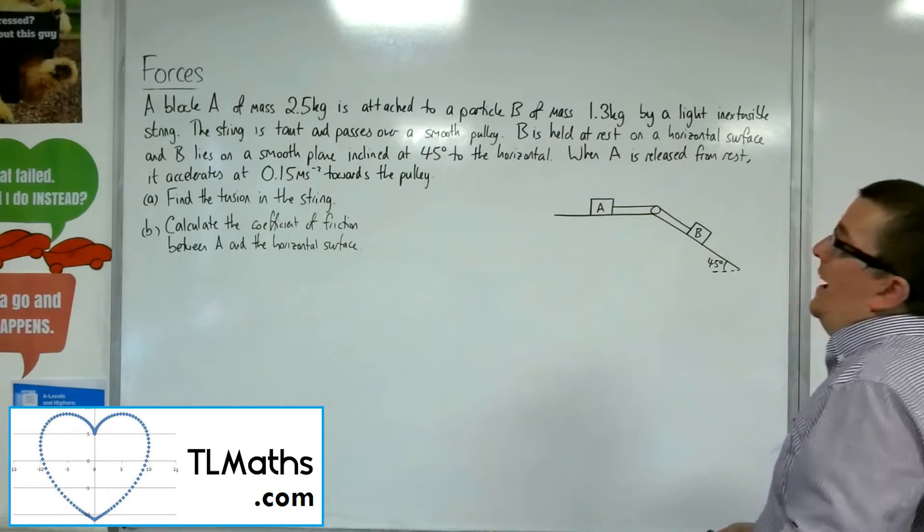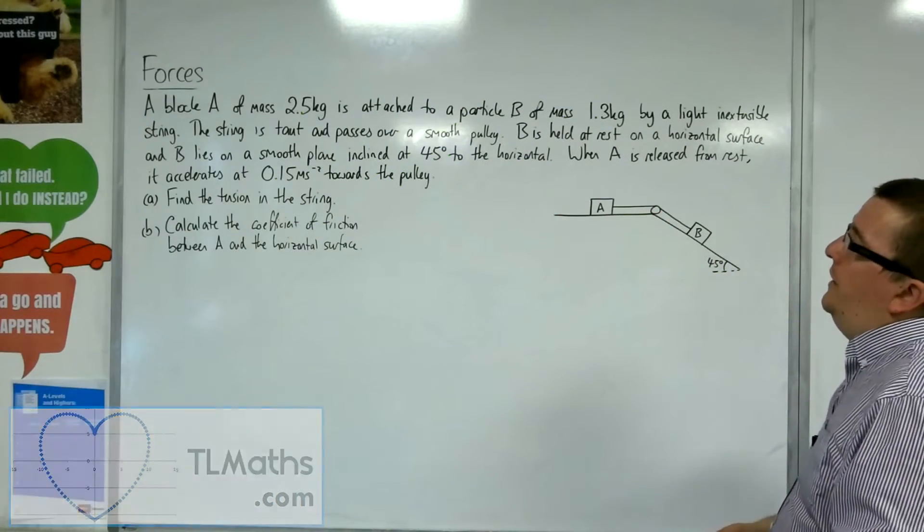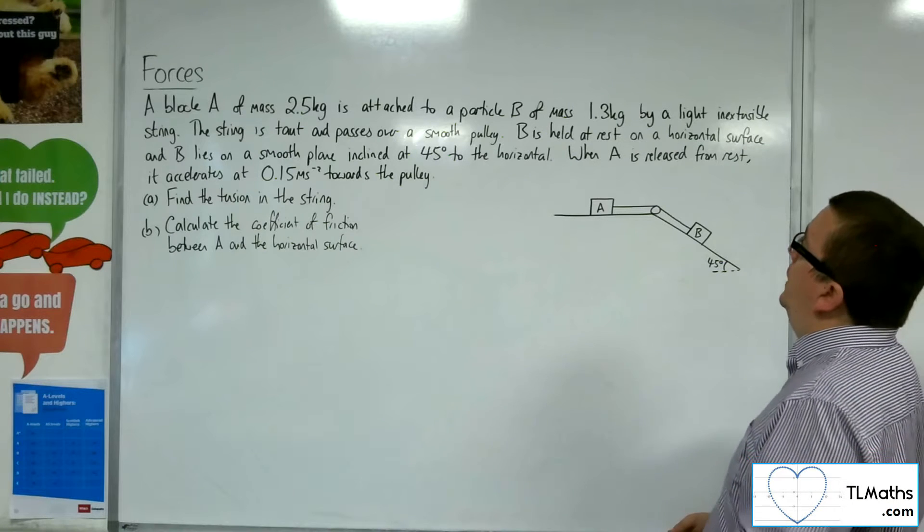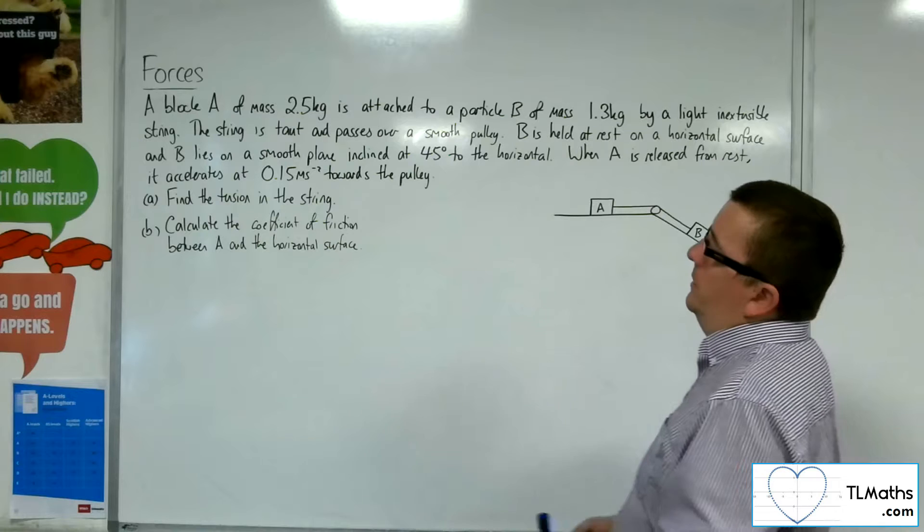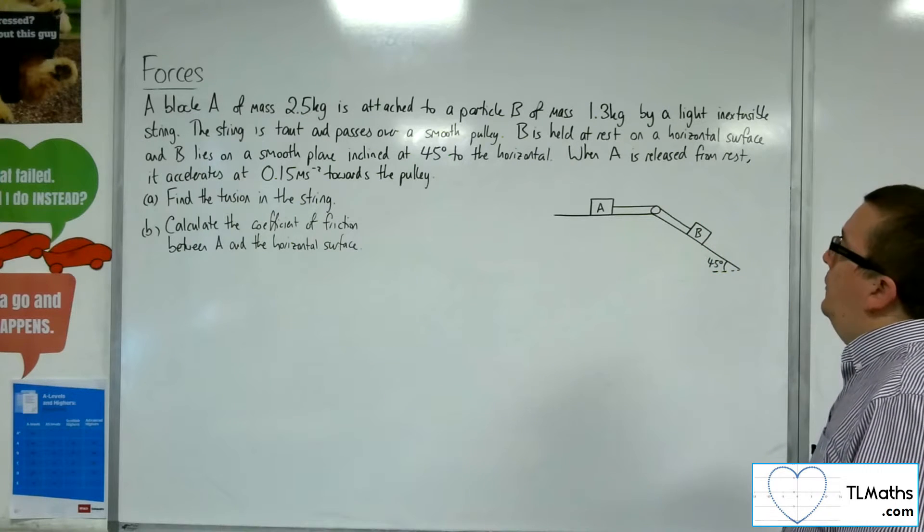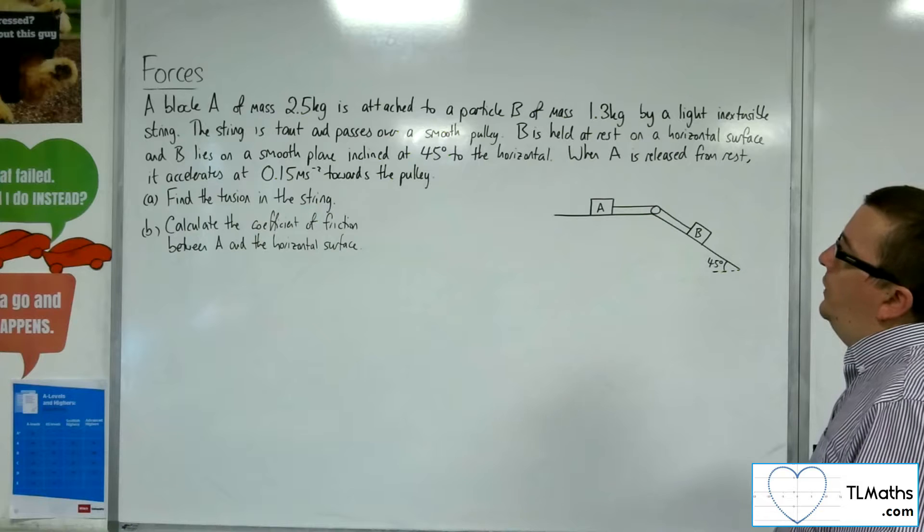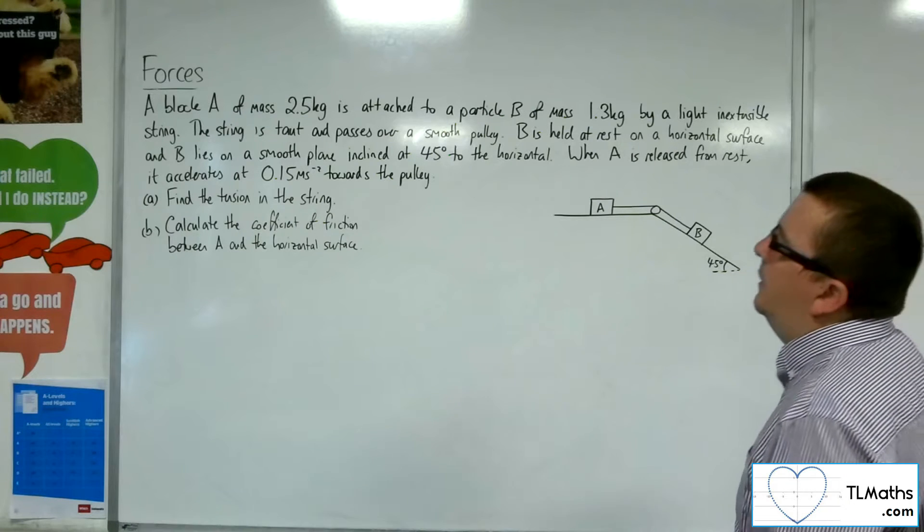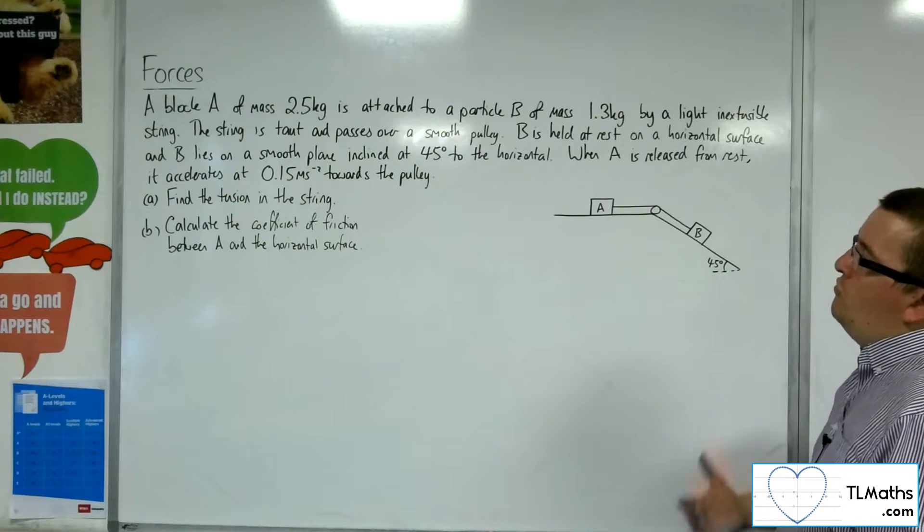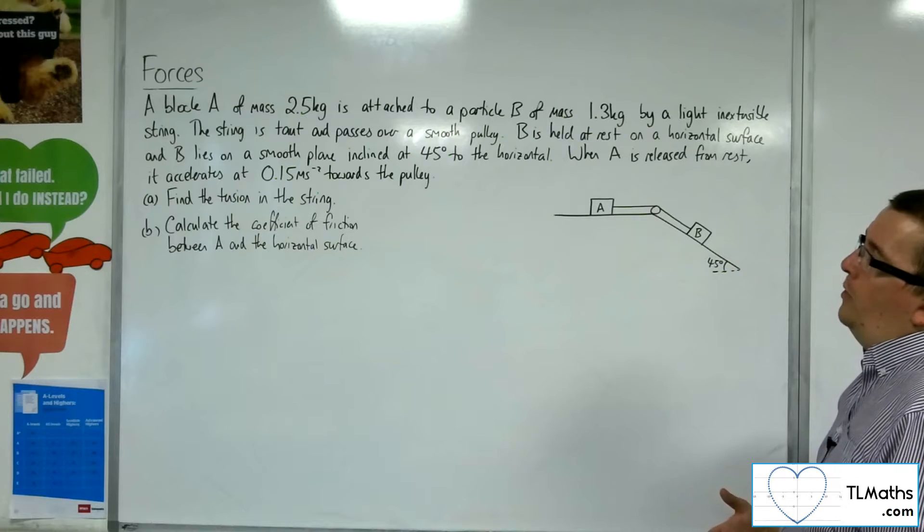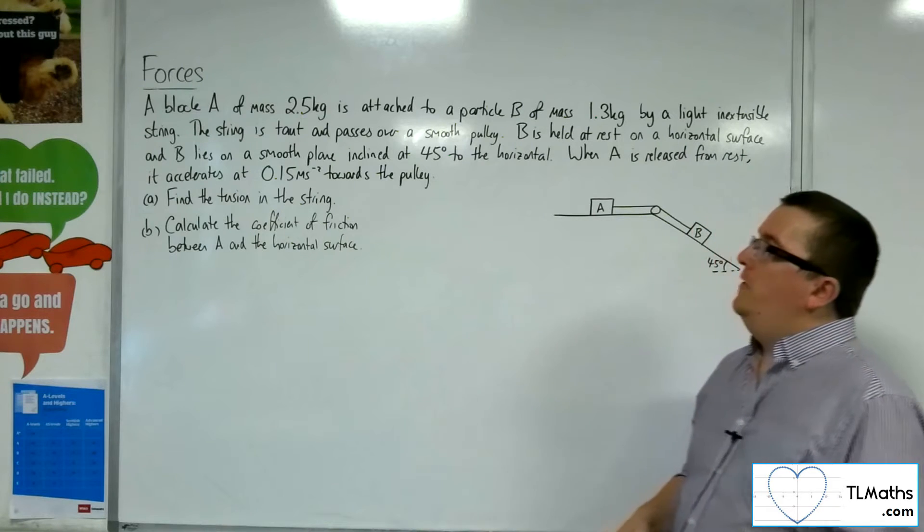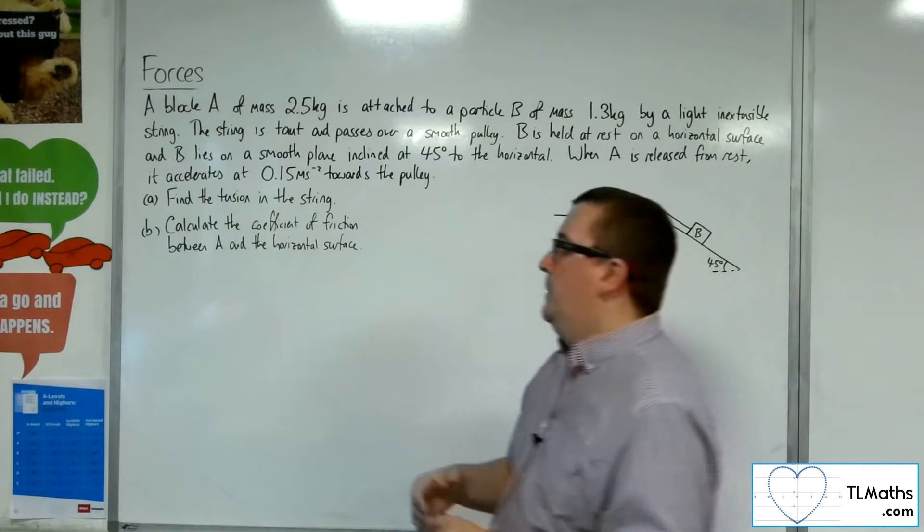OK, in this video, a block A of mass 2.5 kilos is attached to a particle B of mass 1.3 kilos by a light, inextensible string. The string is taut and passes over a smooth pulley. B is held at rest on a horizontal surface, and B lies on a smooth plane inclined at 45 degrees to the horizontal. When A is released from rest, it accelerates at 0.15 meters per second per second towards the pulley. Find the tension in the string, that's the first part.